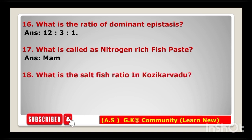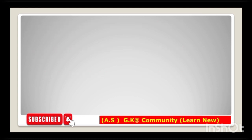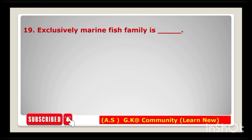Next question: what is the salt-fish ratio in kozhi karvadu? The answer is 1:4. Next question: exclusively marine fish family is — the answer is Muraenidae.